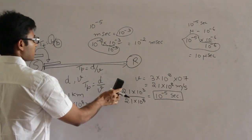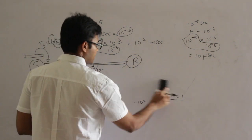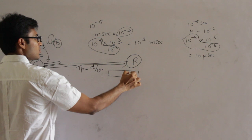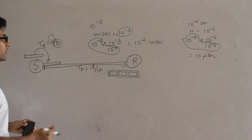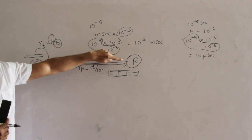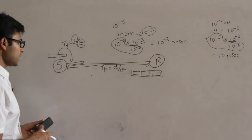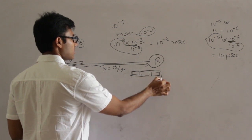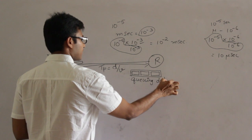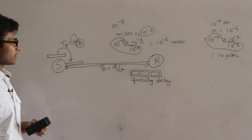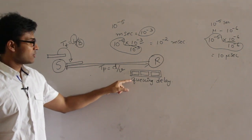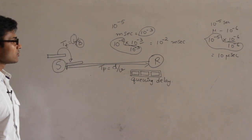Once a packet is received by the destination, it is not processed immediately. It goes and sits in a queue — a buffer. The amount of time a packet waits in the buffer before being processed is called queuing delay. There is no exact formula for queuing delay, so in numerical problems we generally consider it as zero.